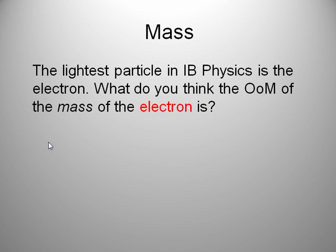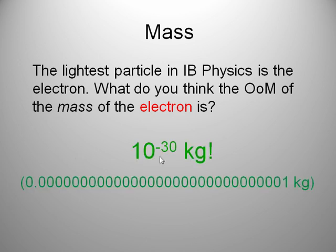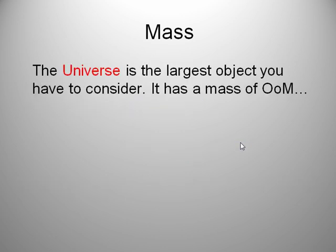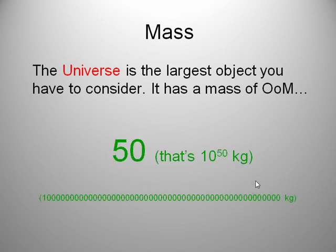The lightest particle in physics is the electron. The mass of the electron is about 9 times 10 to the minus 31 kilograms. 9 is pretty close to 10, so it's almost 10 times 10 to the minus 31st, which is really 10 to the minus 30th. So, negative 30th order. Pretty tiny. The largest mass we know about is the universe itself. It has a mass of about 10 to the 50th kilograms.